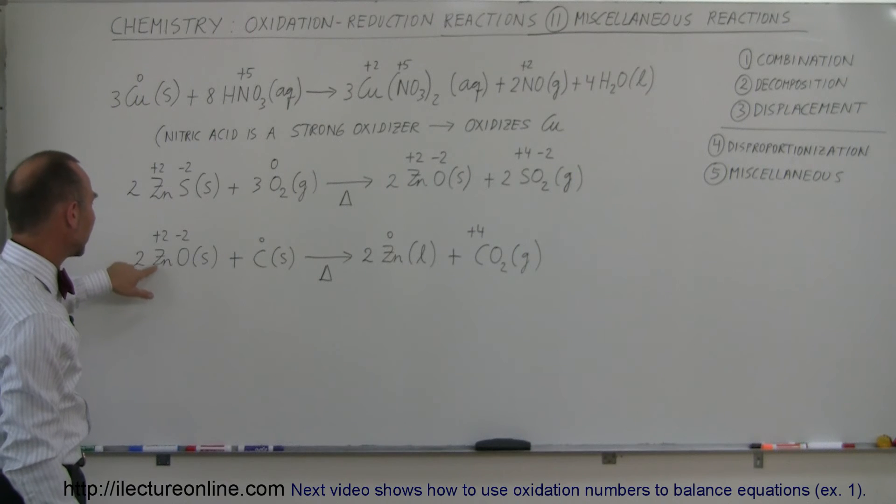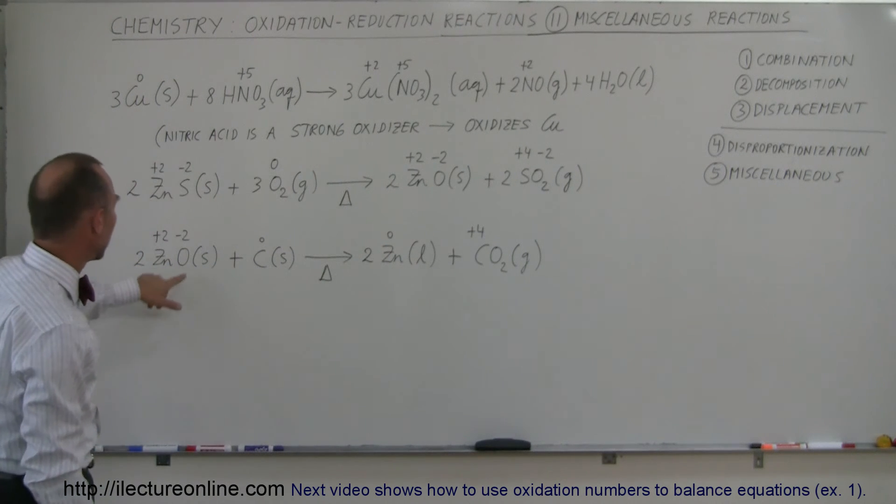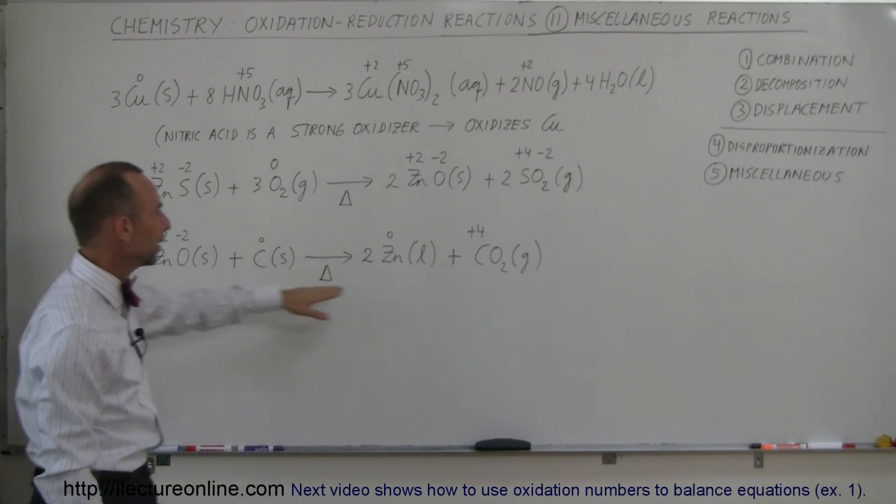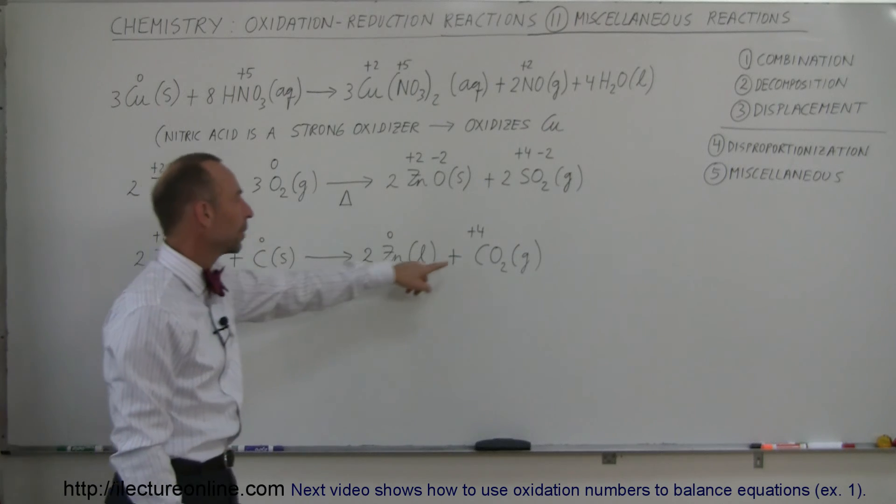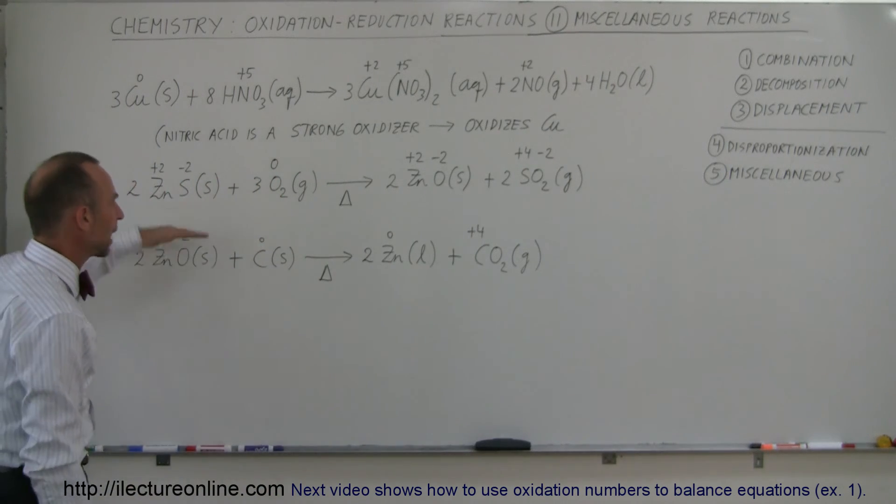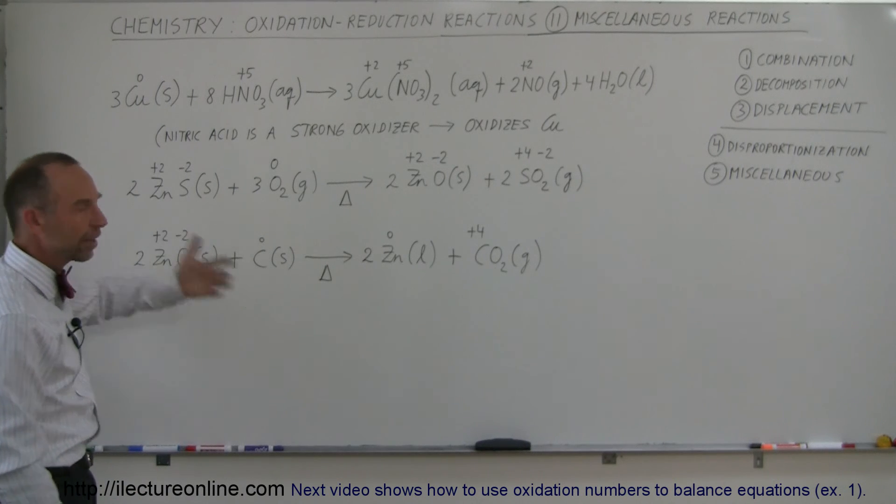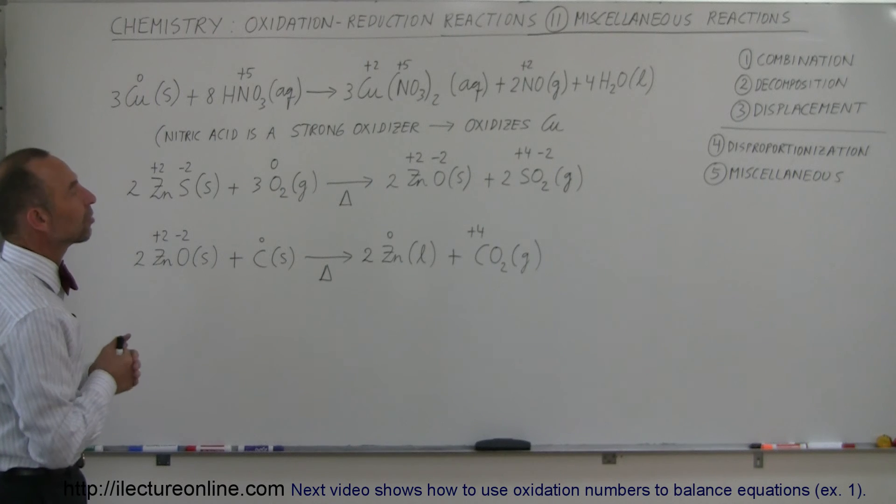We start with zinc at the plus two oxidation state—zinc goes to zero oxidation state. Oxygen at minus two remains at minus two, but the carbon which started at zero oxidation state becomes plus four. Again, it's a mixed bag of reactions, not quite a displacement reaction, so we call it a miscellaneous reaction.